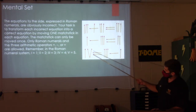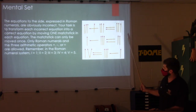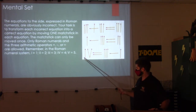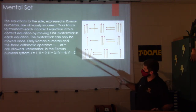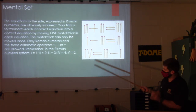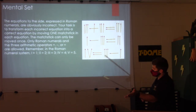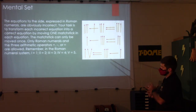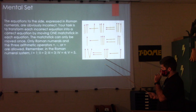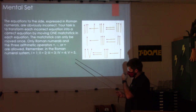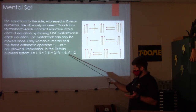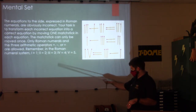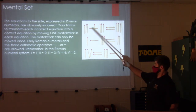Mental set example: equations expressed in Roman numerals that are obviously incorrect. Your task is to transform each incorrect equation into a correct one by moving only one matchstick per equation. Only Roman numerals and the three arithmetic operations — plus, minus, or equals — are allowed.